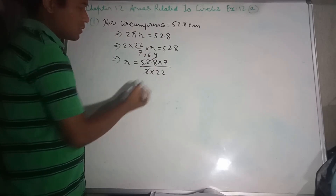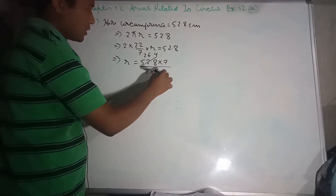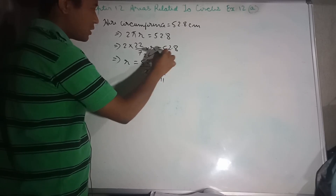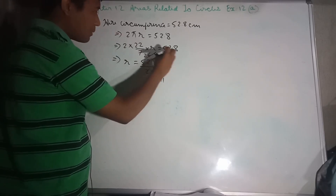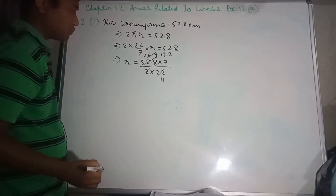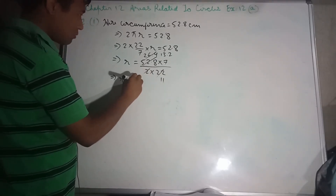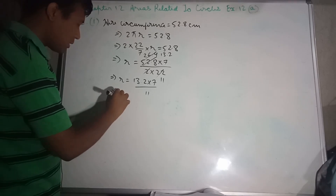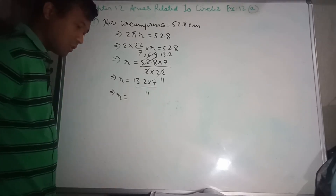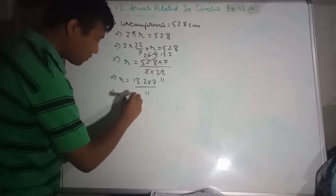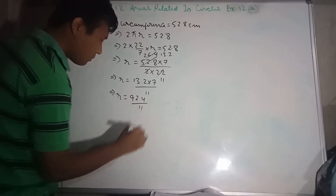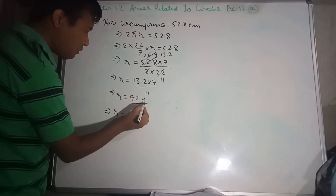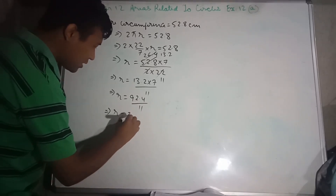Now 26.4 divided by 22. Cancel it — 2 into 22 gives 11. 2 into 13.2 — divide. 2 is 4. Result: 13.2. This implies R equals 13.2 multiplied by 2 into 7 divided by 11. This implies R equals 13.2 into 7.